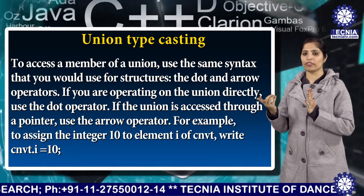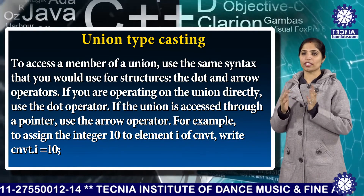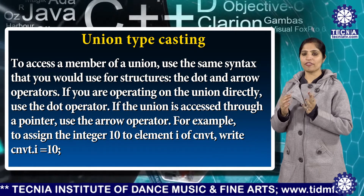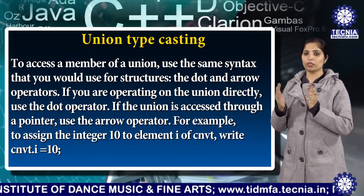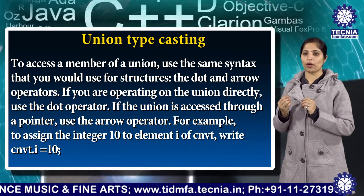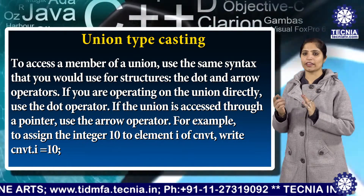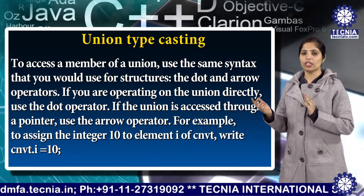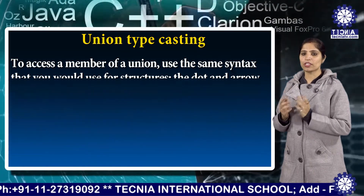To access a member of a union, use the same syntax that you would use for structures — the dot and the arrow operators. If you are operating on the union directly, use the dot operator. If the union is accessed through a pointer, use the arrow operator. For example, to assign the integer 10 to element i of convert, we can write: convert.i = 10.